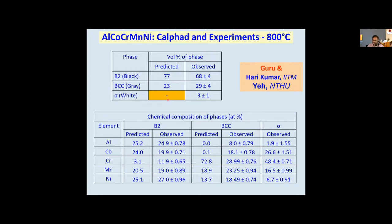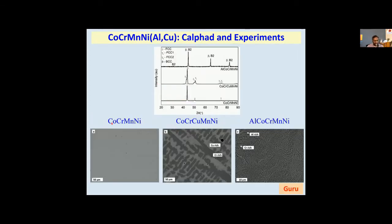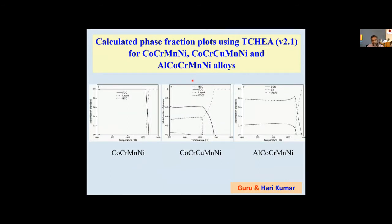High entropy alloys are exciting, but predicting what phases can form in all systems is not so easy. In some systems we are able to do it easily, in some systems it is still difficult. Summarizing the findings: cobalt-chromium-manganese-nickel is a single-phase FCC. The moment I add copper, copper segregates to the interdendritic regions. The moment I add aluminum, it forms a BCC plus B2 kind of phase with a very small precipitation of B2 in a BCC matrix. One can also use binary free energy composition diagrams — so-called GX diagrams — to predict what phases can form, because doing thermodynamics of multi-component systems is much more difficult.